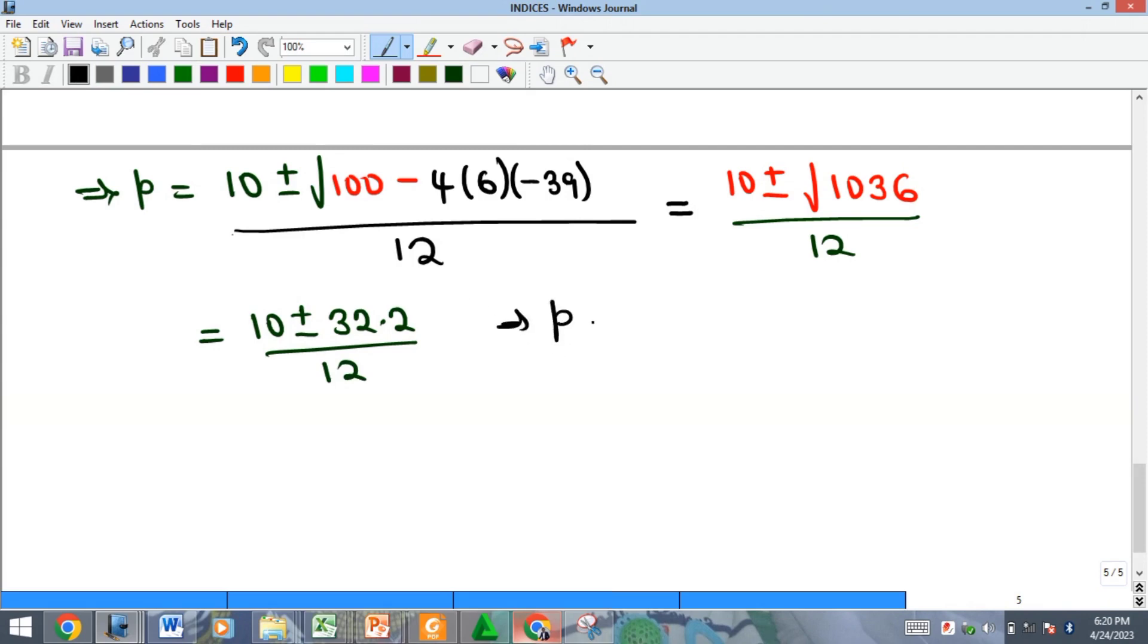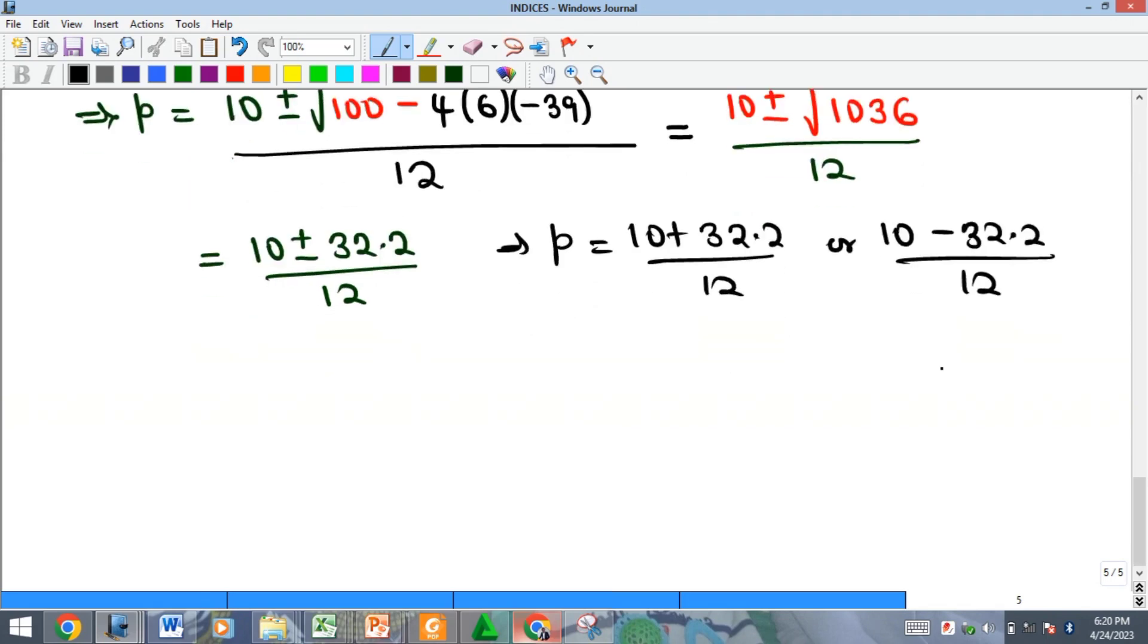From here you will see that our p is either 10 plus 32.2. From here it means our p will be, if you add this, you'll get 42.2.